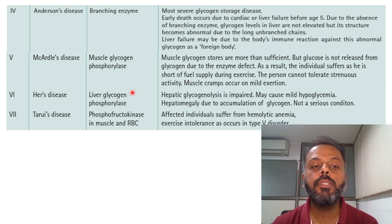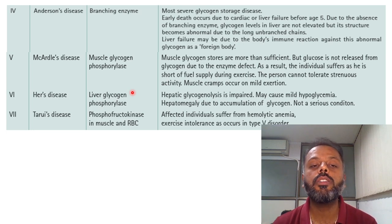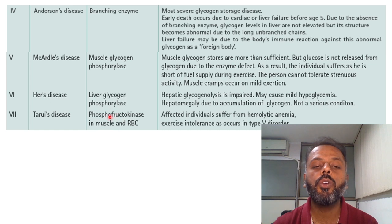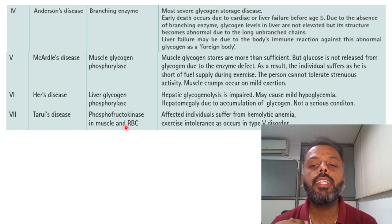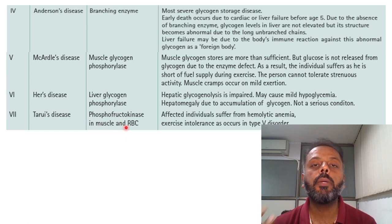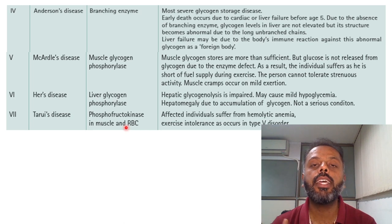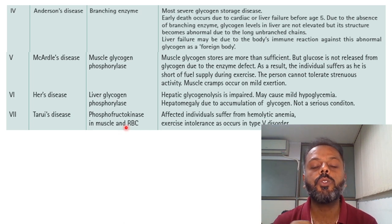Type 7 is Tarui's disease, occurring due to deficiency of phosphofructokinase in both muscle and red blood cells. It is characterized by hemolytic anemia as well as exercise intolerance, similar to Type 5 Glycogen Storage Disease.